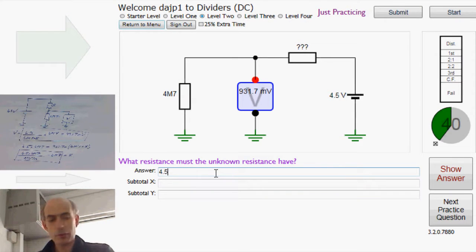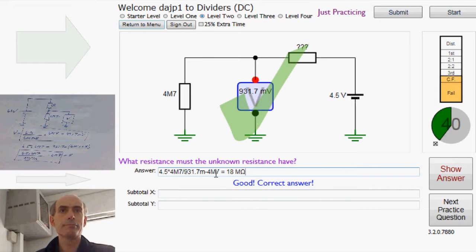18 meg, spot on right. I think that's most of the main types of dividers level 2. Good luck.